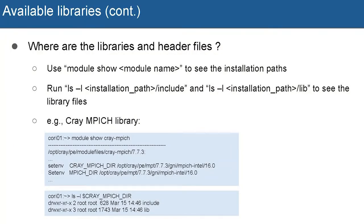Sometimes users need to know where libraries are installed. You can just use 'module show module_name' and it will tell you the installation path. For example, 'module show cray-mpich' shows a lot of output describing what the module defines and does. Inside you can find the CRAY_MPICH_DIR — the directory where the library is installed. You can then ls to the installation directory and find the include and lib directories. In the lib directory you'll find all the library files, and in the include directory you'll find all the headers.